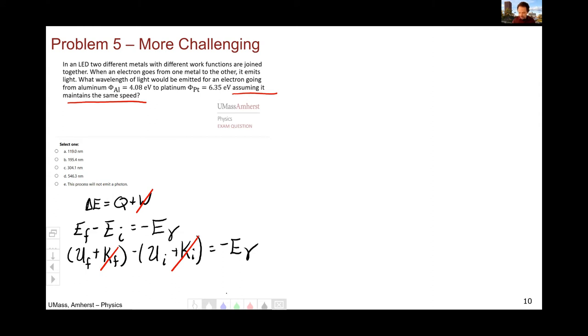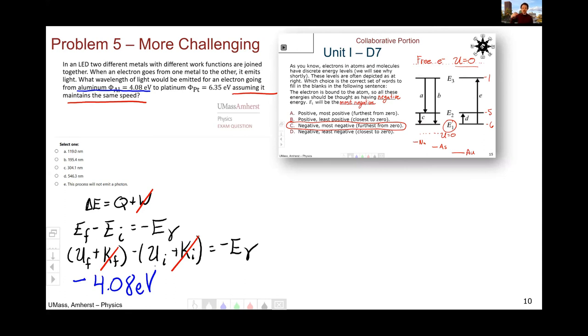So at the beginning, it is in aluminum. So the potential energy there is minus 4.08 EV. The minus was in your reading. And since it was such an important point, I actually reinforced it on the quiz for unit one day seven. Moodle was a little wonky for this day's quiz, so it didn't get scored, but I did try to emphasize the importance of this potential energy of bound electrons is negative. And then I start in the aluminum, so that's where my 4.08 EV goes. And then I end up in the platinum. Minus 6.35 EV, and from there I would be able to solve for the energy of the photon.